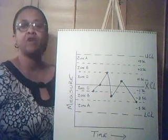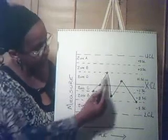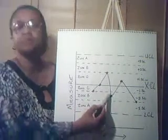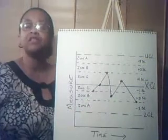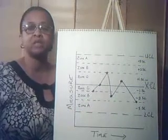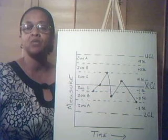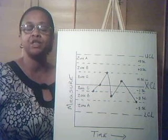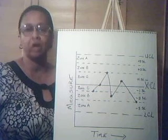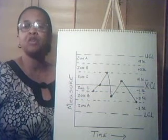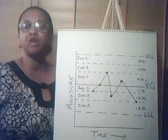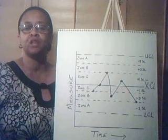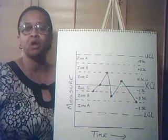And fourth are your measurement data points. These are individual measurements plotted on the x- and y-axis and joined by a line. So these are your four key features of a control chart.